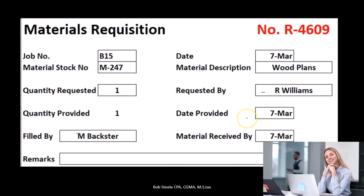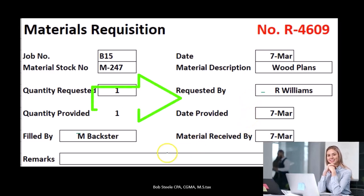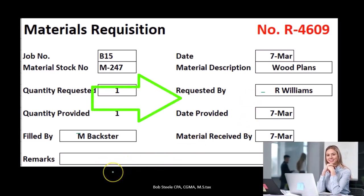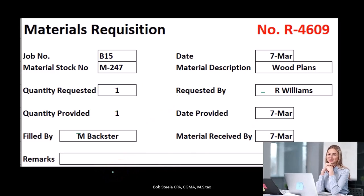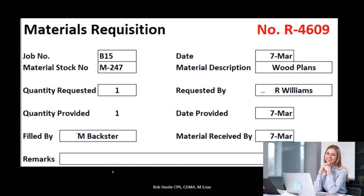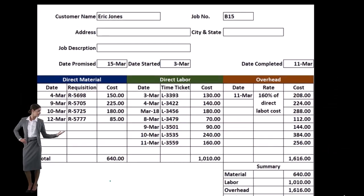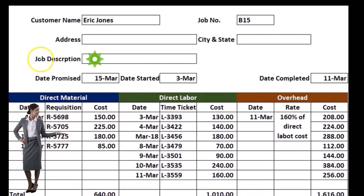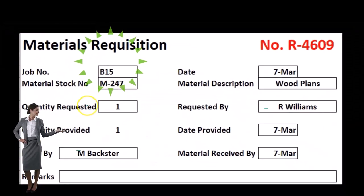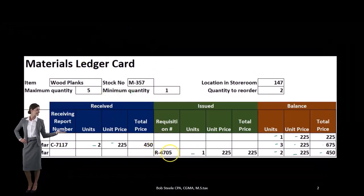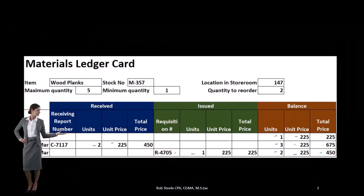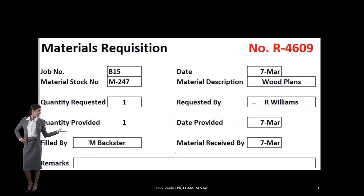The form also includes the date provided, material received date, and any remarks. This form is used to get the wood from the warehouse into work in process so we can start working on it. And remember, it all ties out to this form as well — the requisition form is used on the materials side to get materials out of the warehouse.